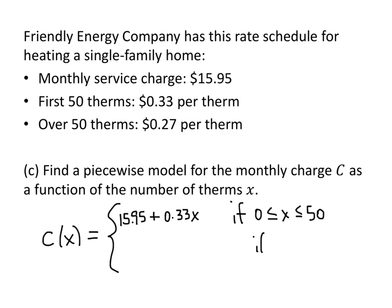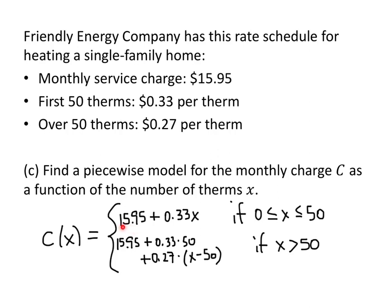The other case is if x is greater than 50. In this case, we will have to worry about the 27 cents, so this is a bit more complicated. We still pay 33 cents per therm for the first 50, so we're paying our basic monthly charge of $15.95, plus 33 cents times 50, plus 27 cents times the remaining therms. x is the total number of therms, but we've already paid for 50 of those at 33 cents each, so the number left over is x minus 50. That's our expression for what happens when x is greater than 50.